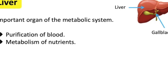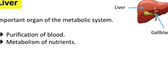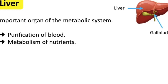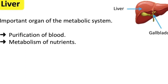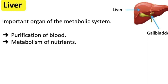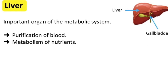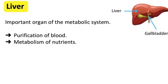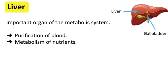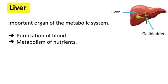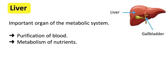Metabolism of nutrients — these include fats, carbohydrates, minerals, vitamins, etc. Liver ensures a good and constant level of nutrients in the body. For example, the liver breaks carbohydrates into sugar depending on the need of the body, and sends this sugar back to the body to be used as energy.